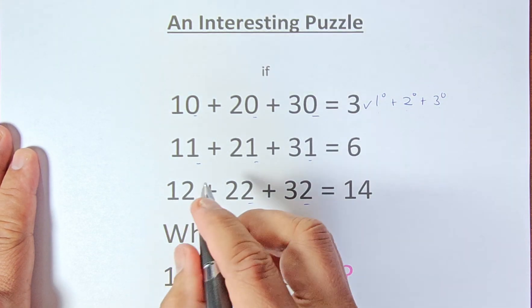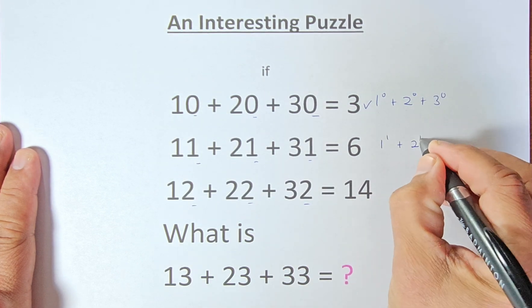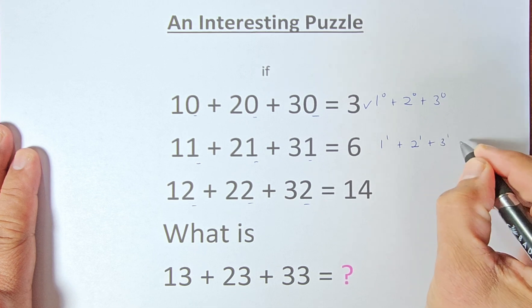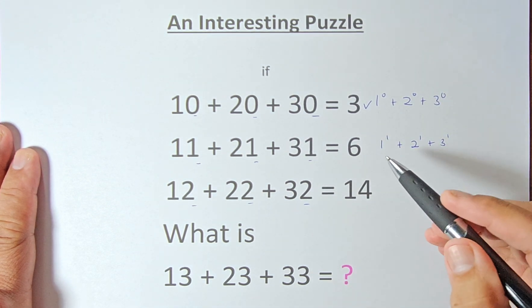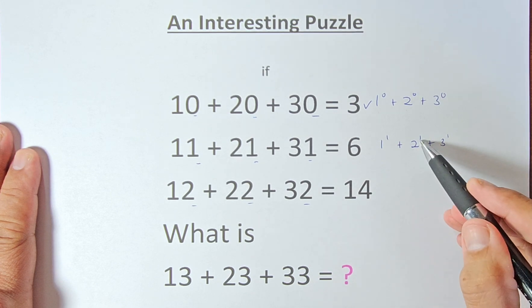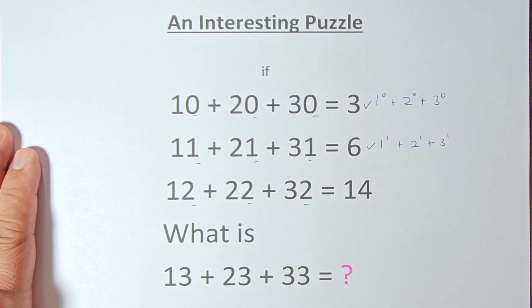Next line, 11, 21, 31. It becomes 1 to the power of 1 plus 2 to the power of 1 plus 3 to the power of 1. So any number to the power of 1 remains the same. So 1 to the power of 1 is 1, 2 to the power of 1 is 2, 3 to the power of 1 is 3. So 1 plus 2 plus 3, and that will give us 6.